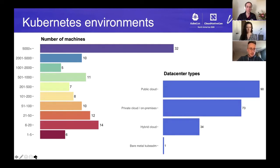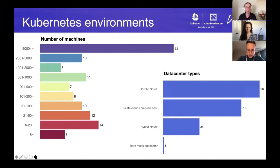For the environments these folks had, by far and away people were running quite a few machines. Our biggest bucket was 5,000 or more machines, which is how most people responded. The ones lower are surprisingly evenly spread — so if we run a survey like this again, we might break it up into 5,000 to 10,000 and then more than 10,000. For data center types, most people are running in public cloud, but a lot are also running private cloud or on-premises. Fewer are running hybrid cloud, and one person wrote in bare-metal kubeadmin.